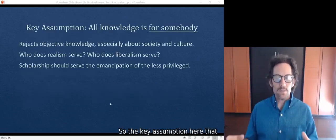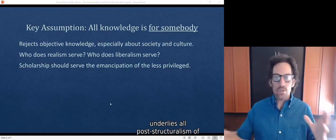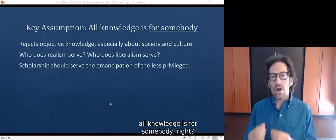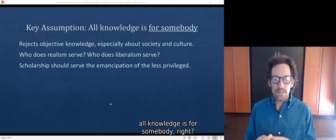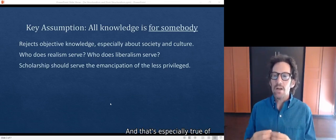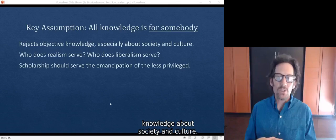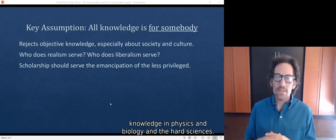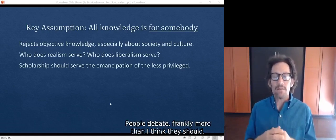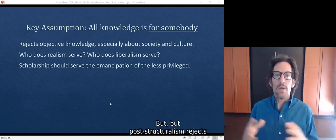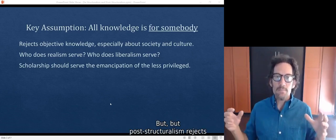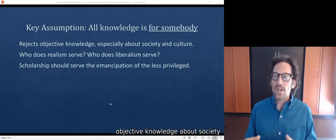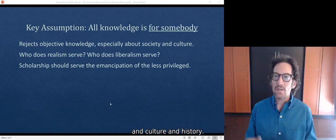So the key assumption here that underlies all post-structuralism of all kinds of different sorts is that all knowledge is for somebody. And that's especially true of knowledge about society and culture. Whether it's true about knowledge in physics and biology and the hard sciences, people debate frankly more than I think they should. But post-structuralism rejects the idea that there is objective knowledge about society and culture and history.